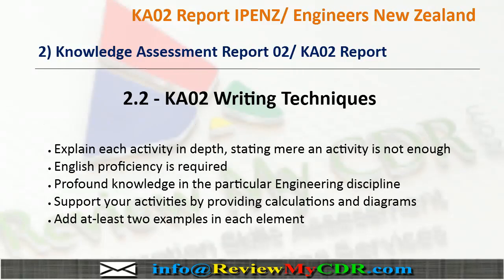Writing a KA02 report needs some techniques. First, explain each activity in depth — just stating an activity is not enough for your KA02 report. English proficiency is also required to write this report. You need to have profound knowledge in your particular engineering discipline, and you need to add at least two examples in each element to make your KA02 report more effective.